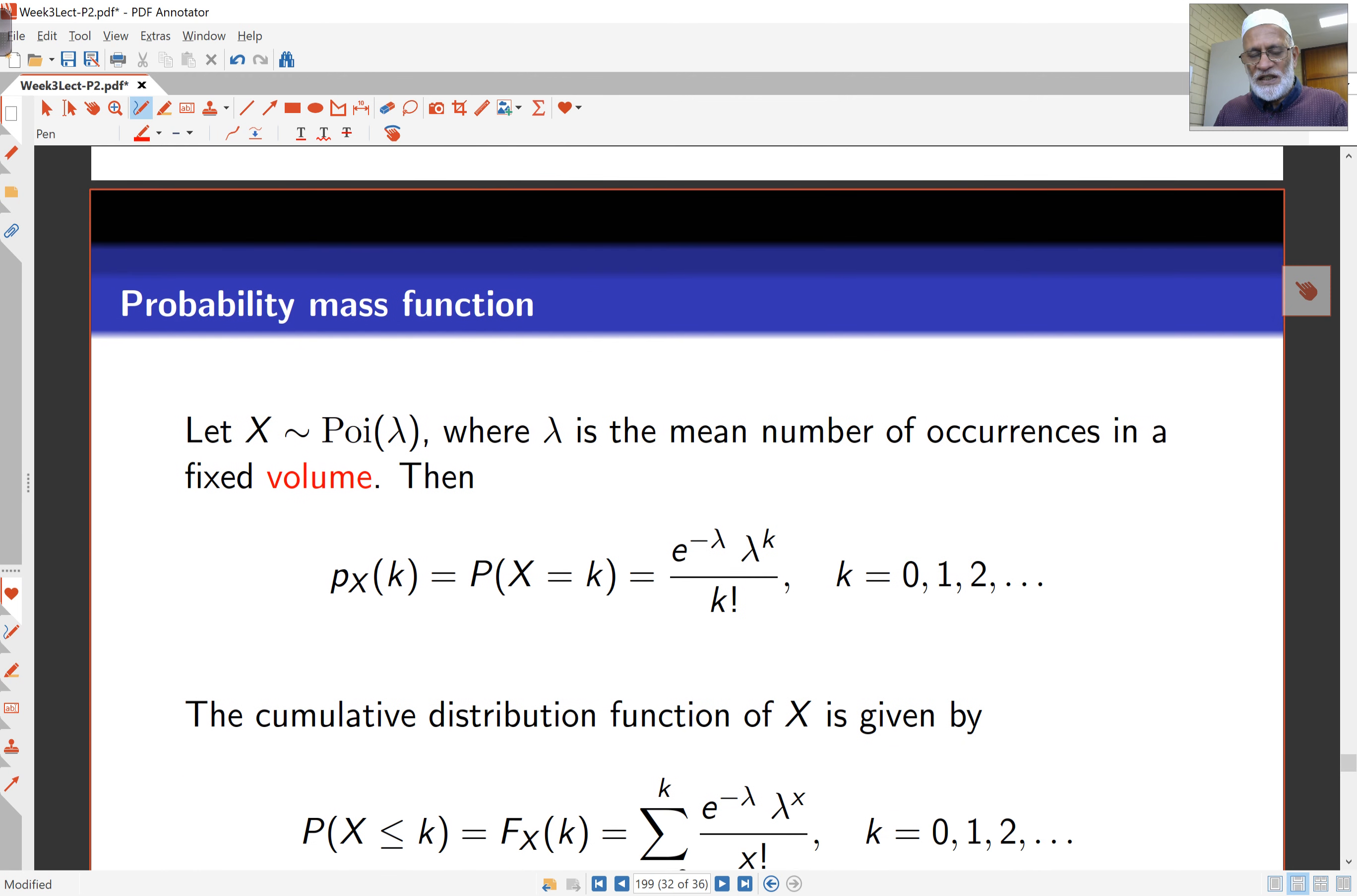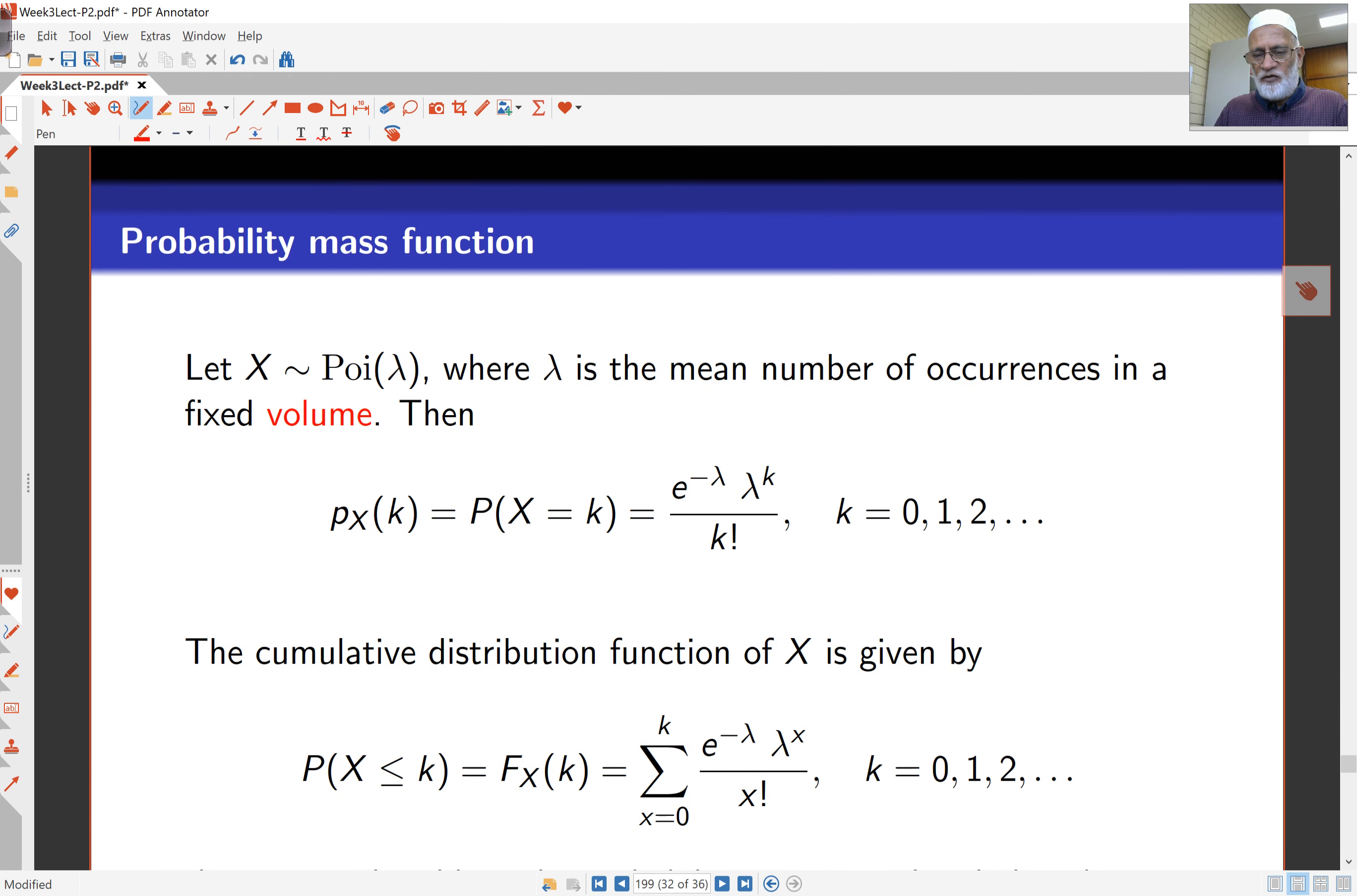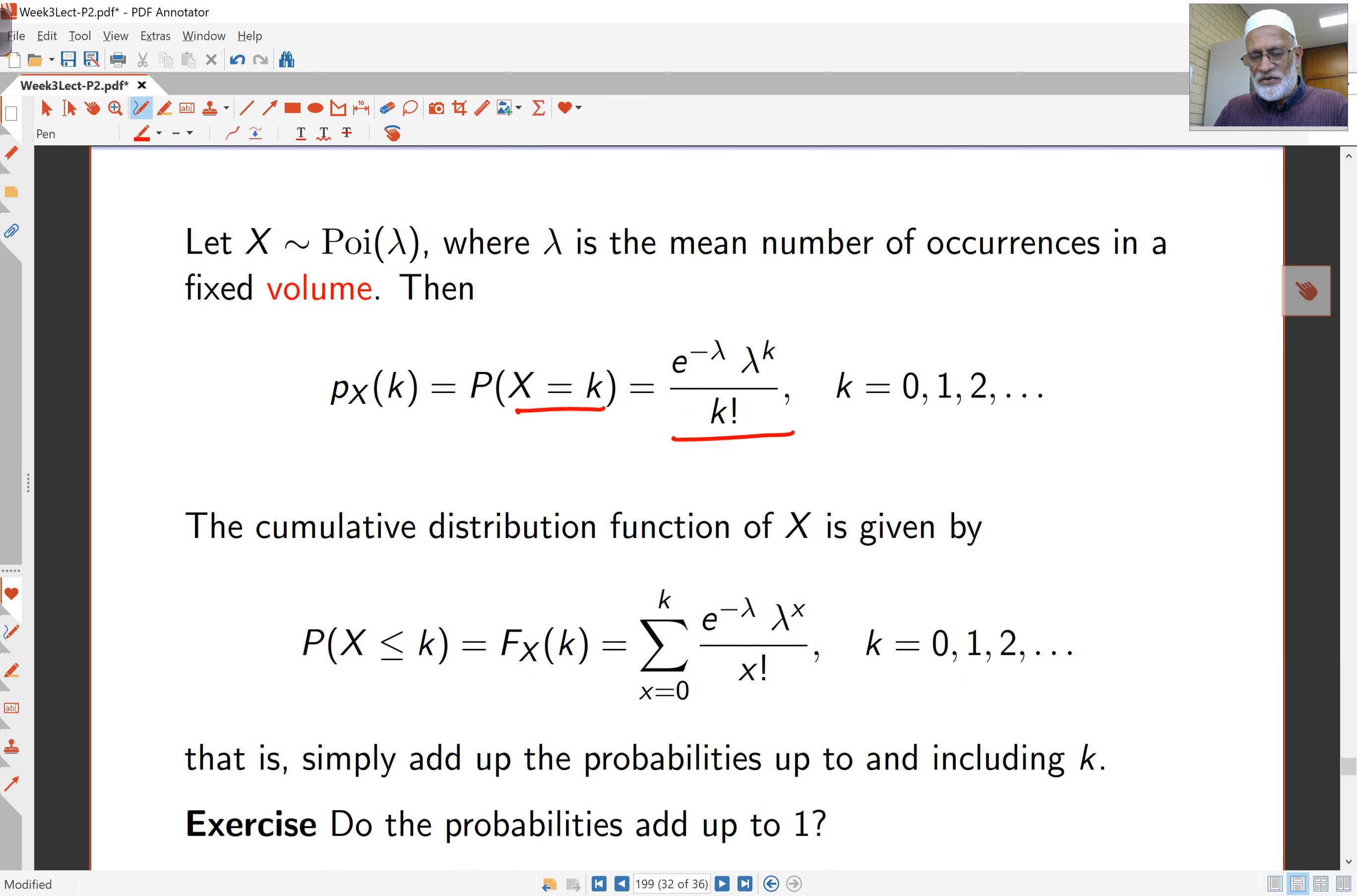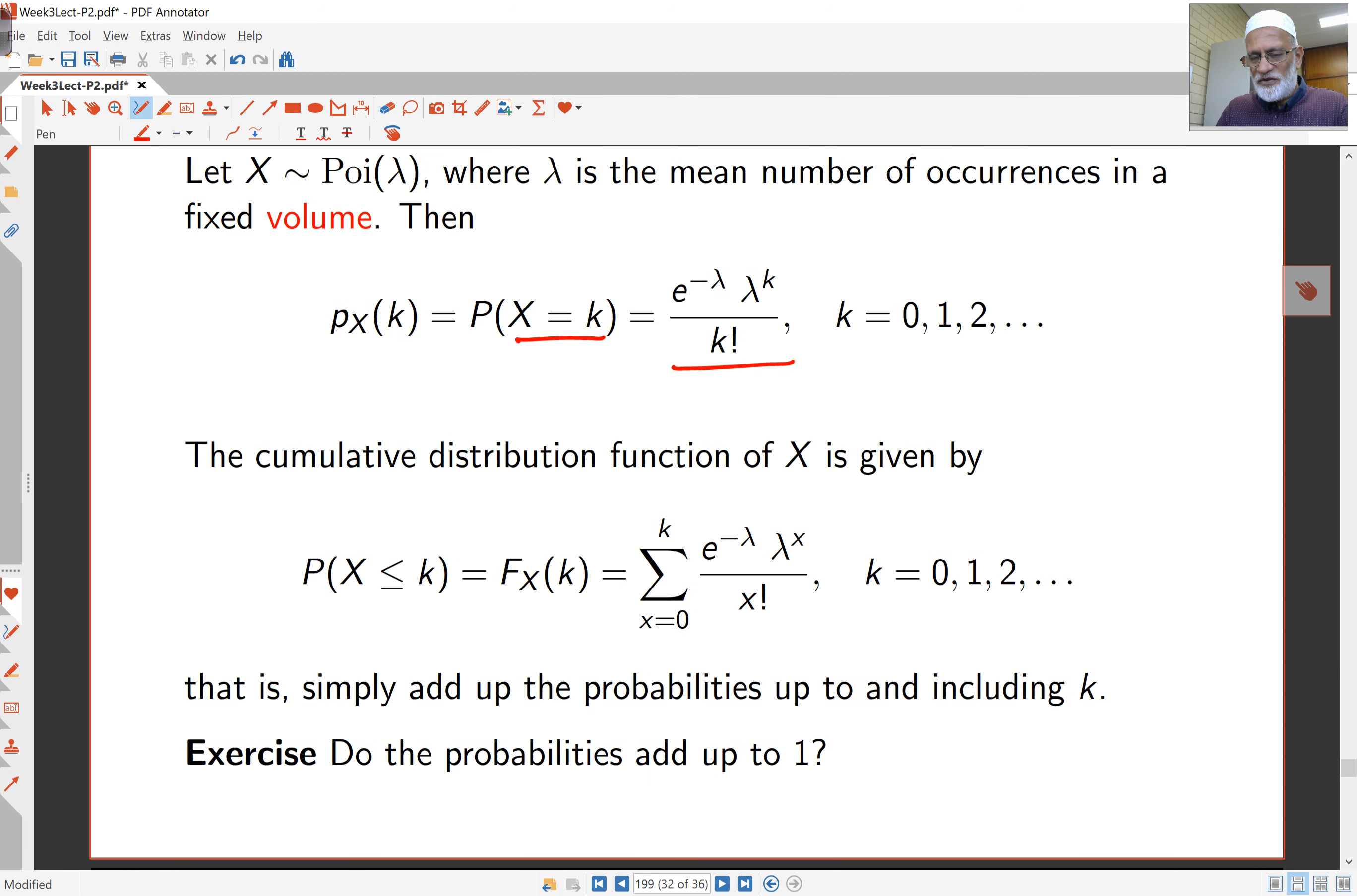Probability mass function, probabilities for Poisson distribution are given by the formula here. Probability you get k occurrences is this formula, where k takes values 0, 1, and so on. The cumulative distribution is probability of less than or equal to k, and this is simply, again as before, adding up probabilities from 0 up to k. Now the question is, would all these probabilities actually add to 1 here? That's an exercise for those who are more mathematically minded. We'll see this later in the workshops.